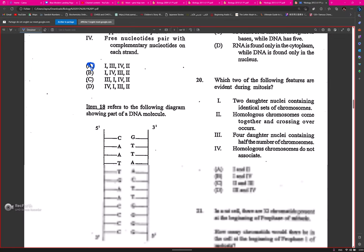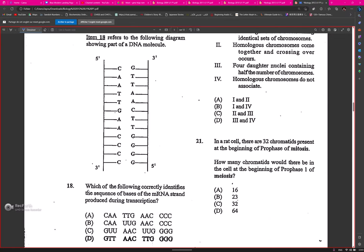Question eighteen: which of the following correctly identifies the sequence of bases of the mRNA strand produced during transcription? Which strand are we using? Using five prime to three prime. CAA would give GUU, beautiful.